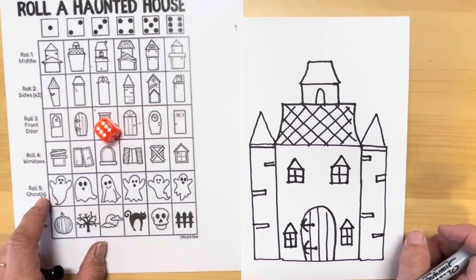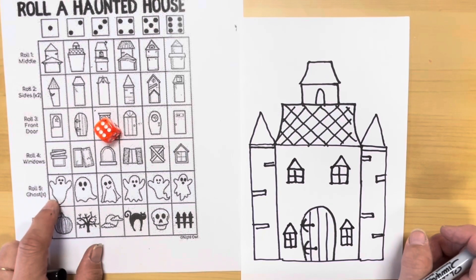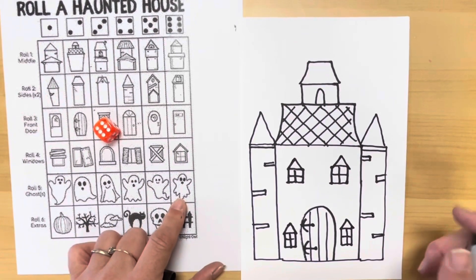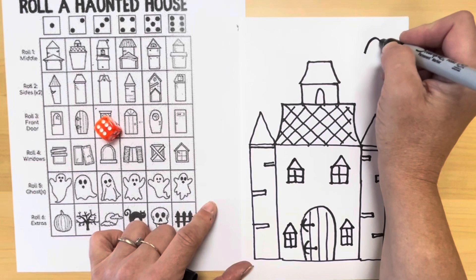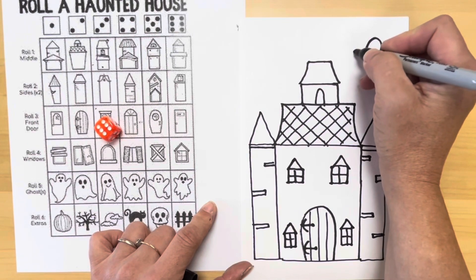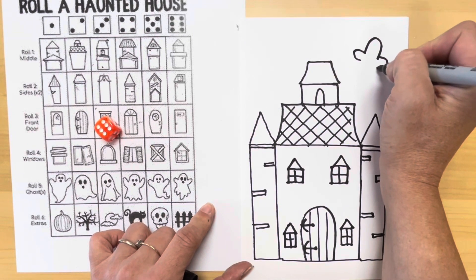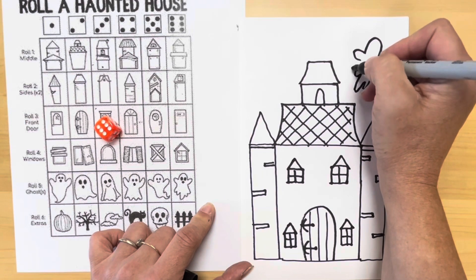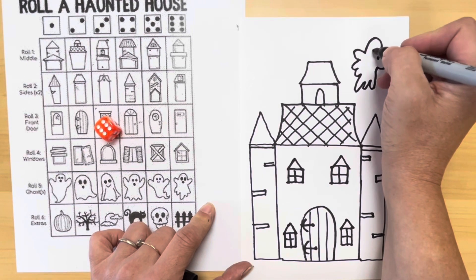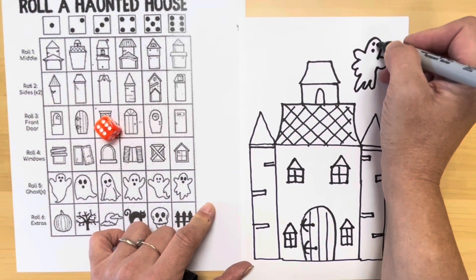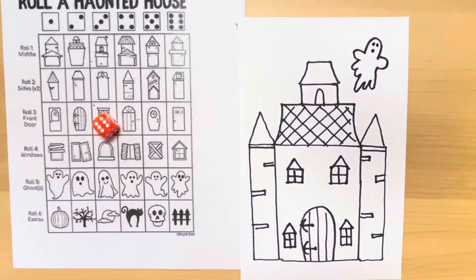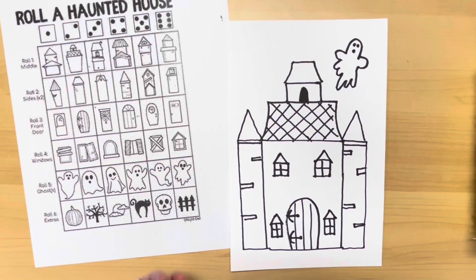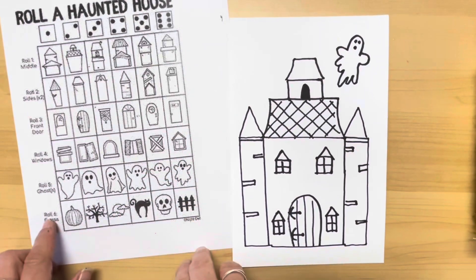A ghost. I got ghost number six. All right, that's that one. I make the head. I make the hands. And then I make kind of a wiggly line. Don't get too worked up about making these look exactly like the picture. Just make a spooky ghost. Okay, so next, my last roll.